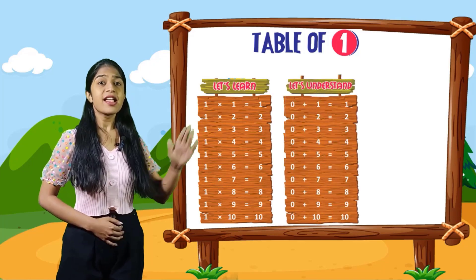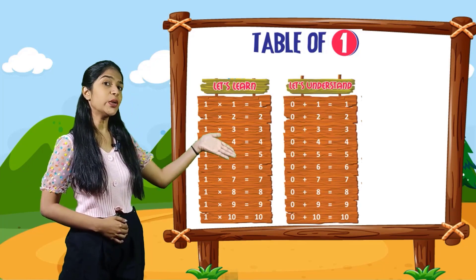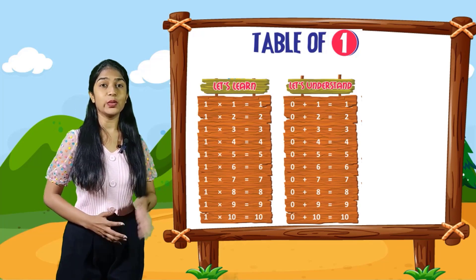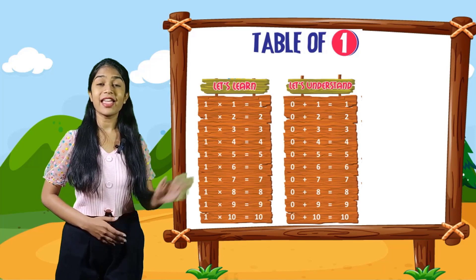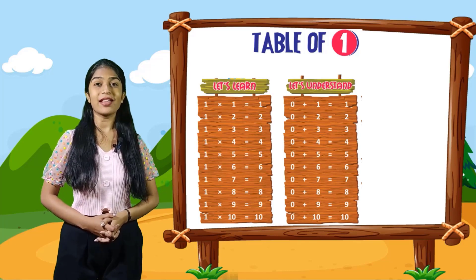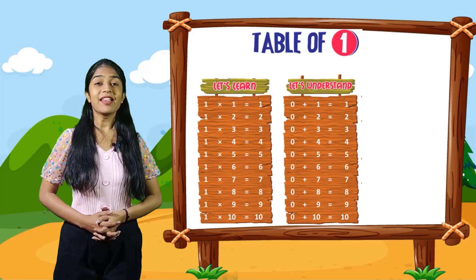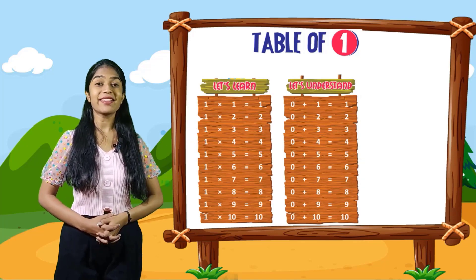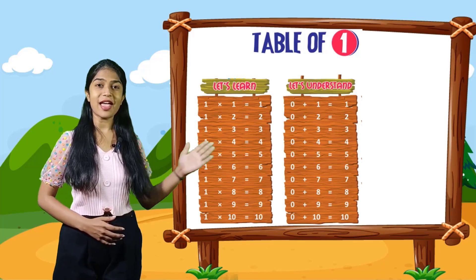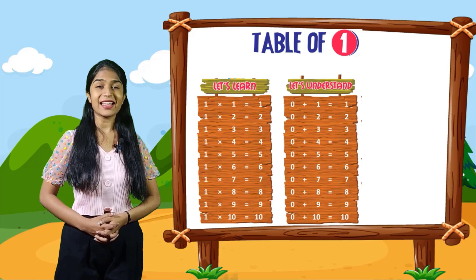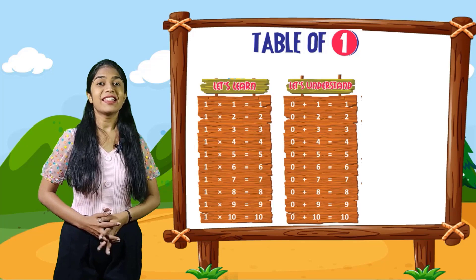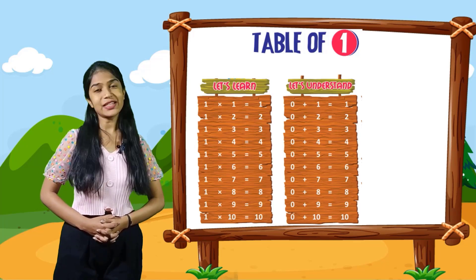So let's understand. 0 plus 1 is equal to 1. 0 plus 2 is equal to 2. 0 plus 3 is equal to 3. 0 plus 4 is equal to 4. 0 plus 5 is equal to 5. 0 plus 6 is equal to 6. 0 plus 7 is equal to 7. 0 plus 8 is equal to 8. 0 plus 9 is equal to 9. 0 plus 10 is equal to 10.